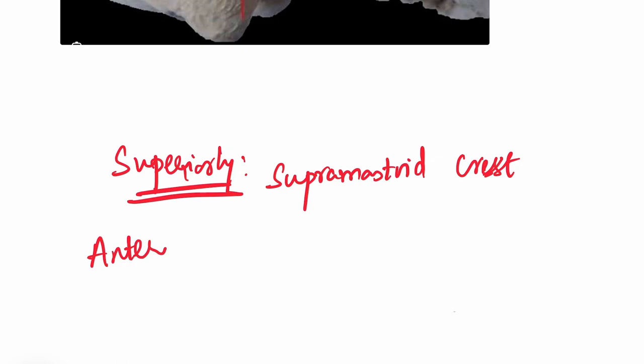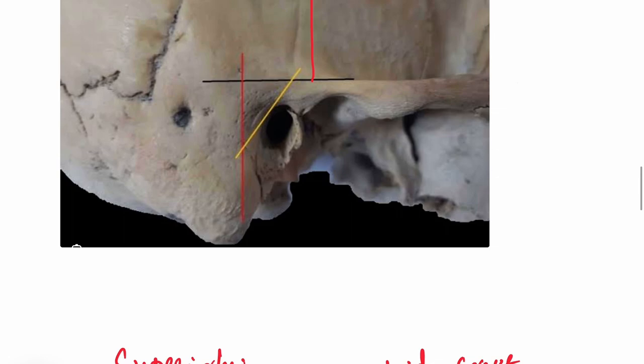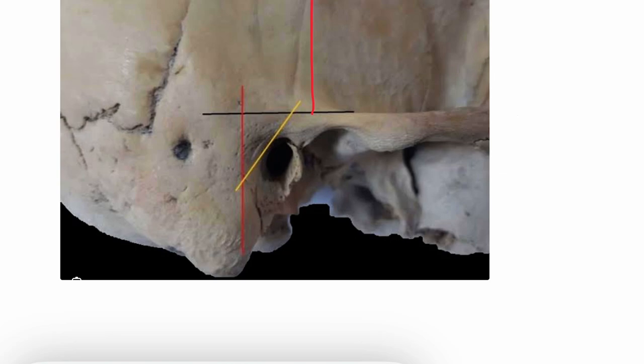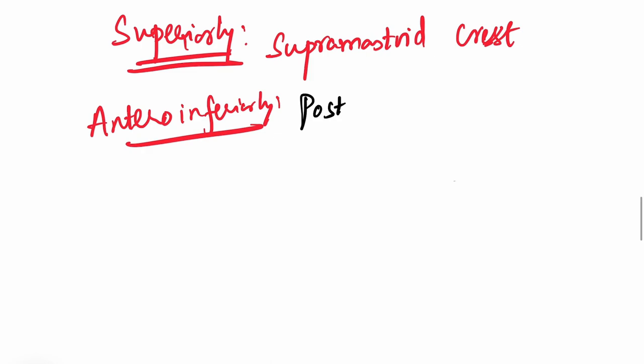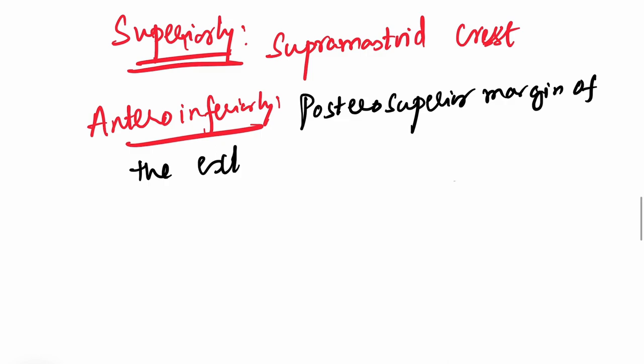Anteroinferiorly, you can see this yellow color line in the diagram. This anteroinferior boundary is formed by the posterior superior margin of the external acoustic meatus.